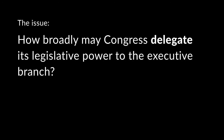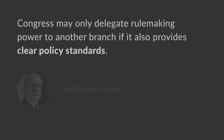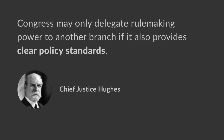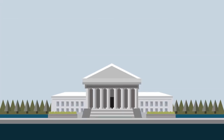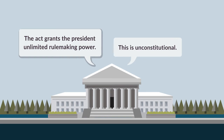The Supreme Court accepted the case to address how broadly Congress may delegate its legislative power to another branch of government. Chief Justice Hughes wrote the majority opinion, holding that Congress may only delegate rulemaking power to another branch if it also provides clear policy standards that direct and limit how and in what circumstances the power is to be used. The Supreme Court found that Section 9C didn't declare any clear policy standards or otherwise limit the President's rulemaking authority. Because the Act granted the President unlimited power to create and enforce his own oil industry policy, Section 9C unconstitutionally delegated legislative power to the administration.